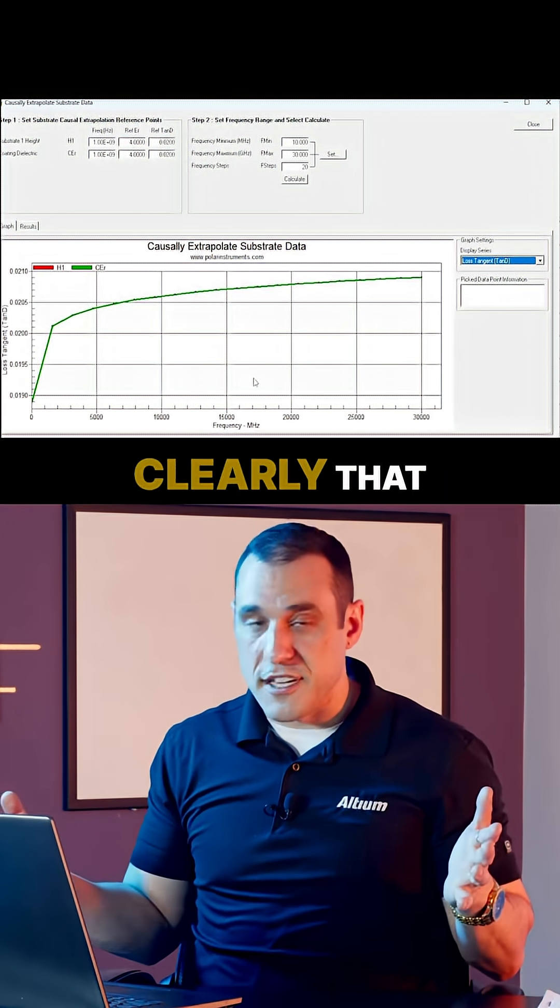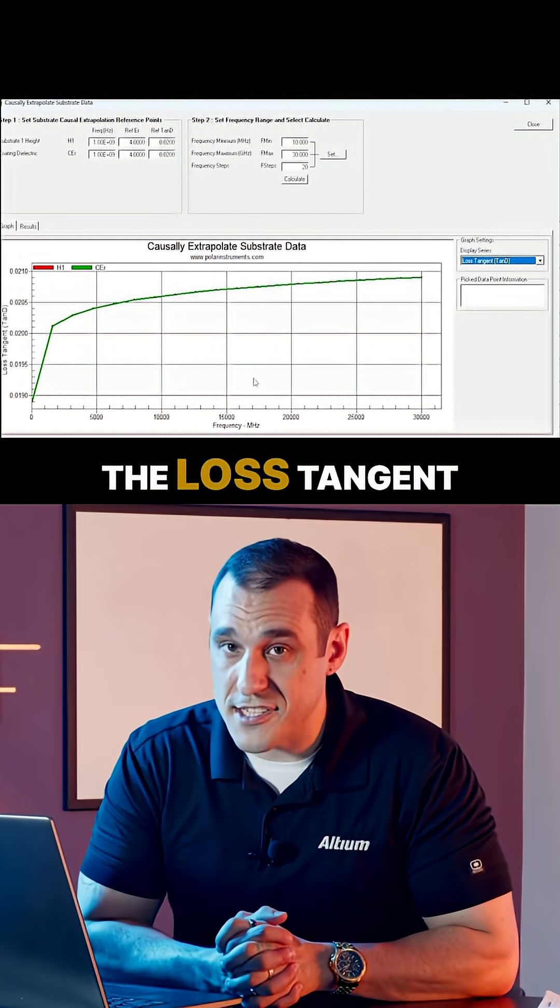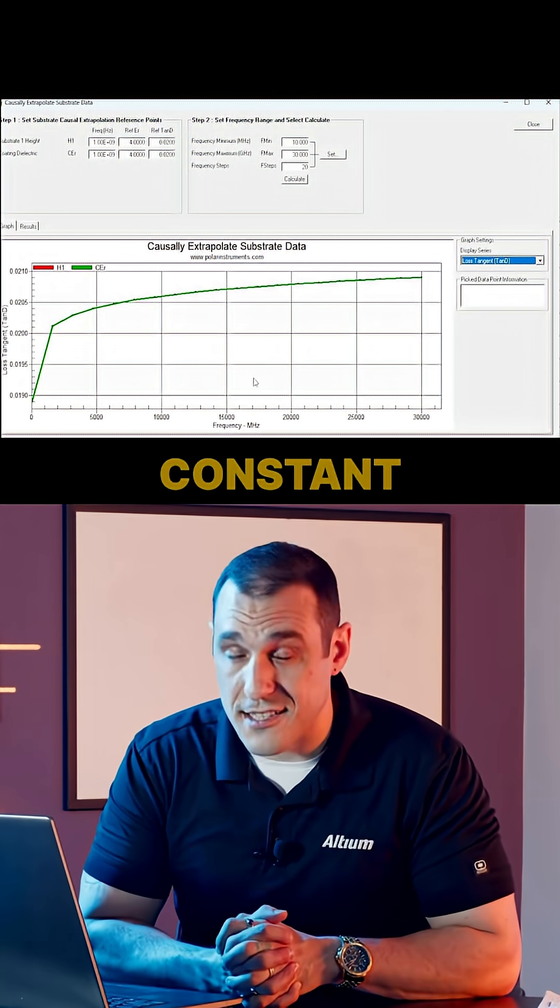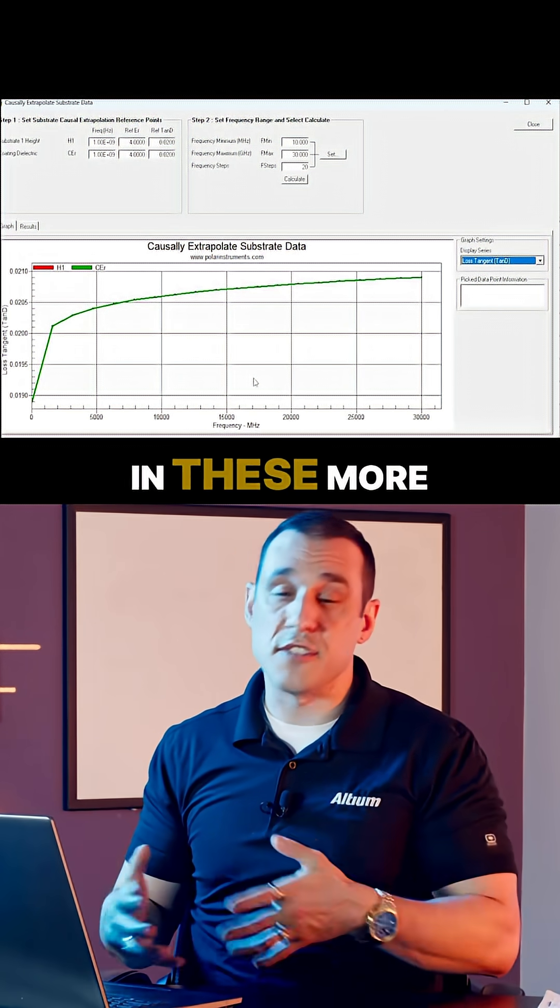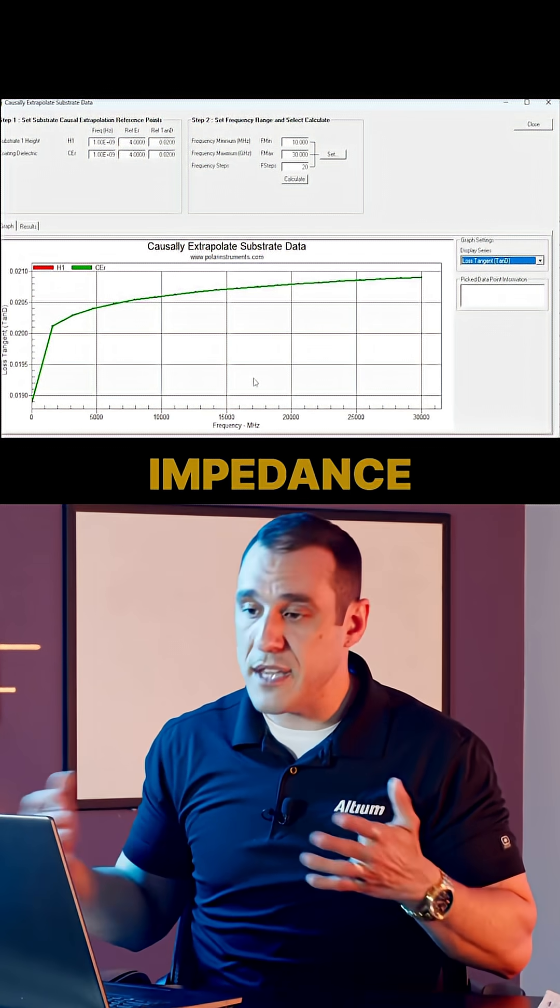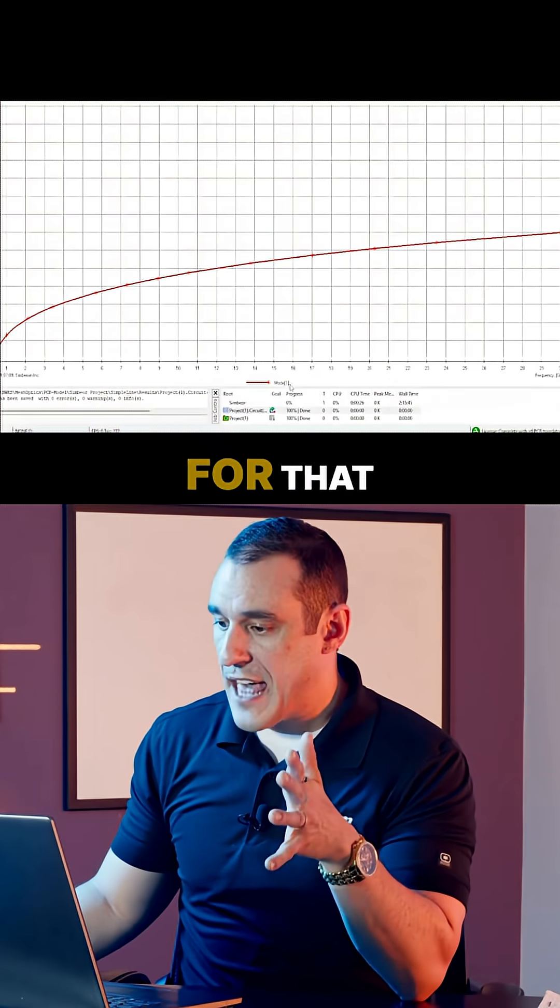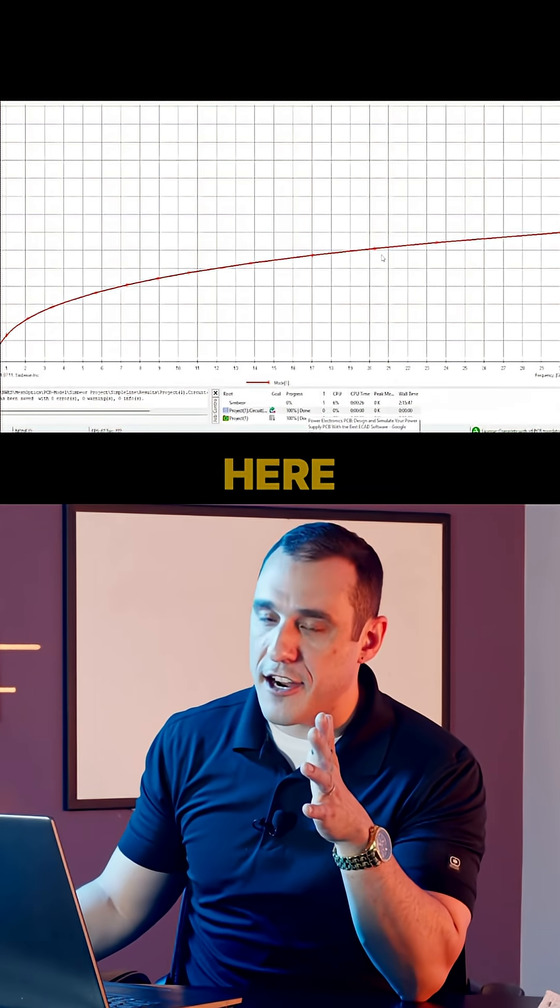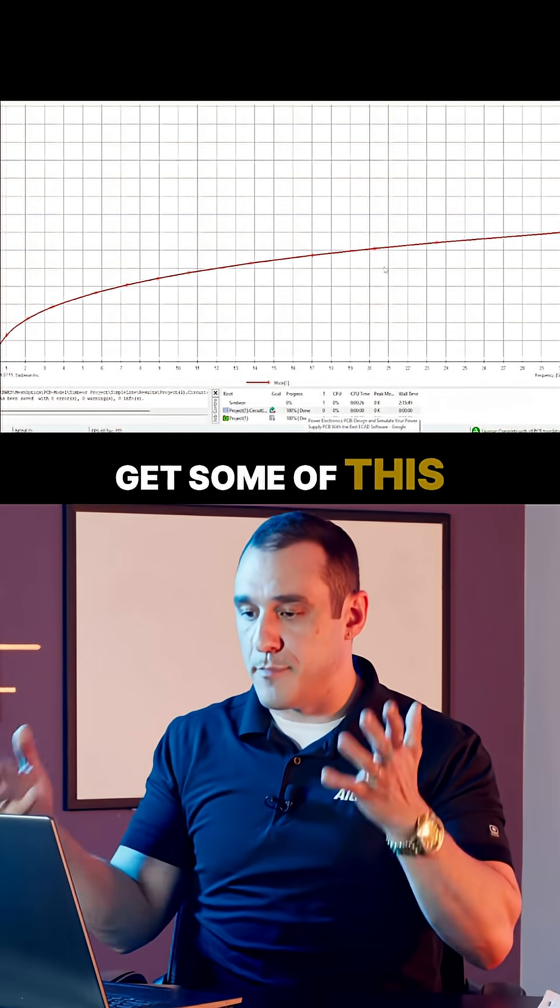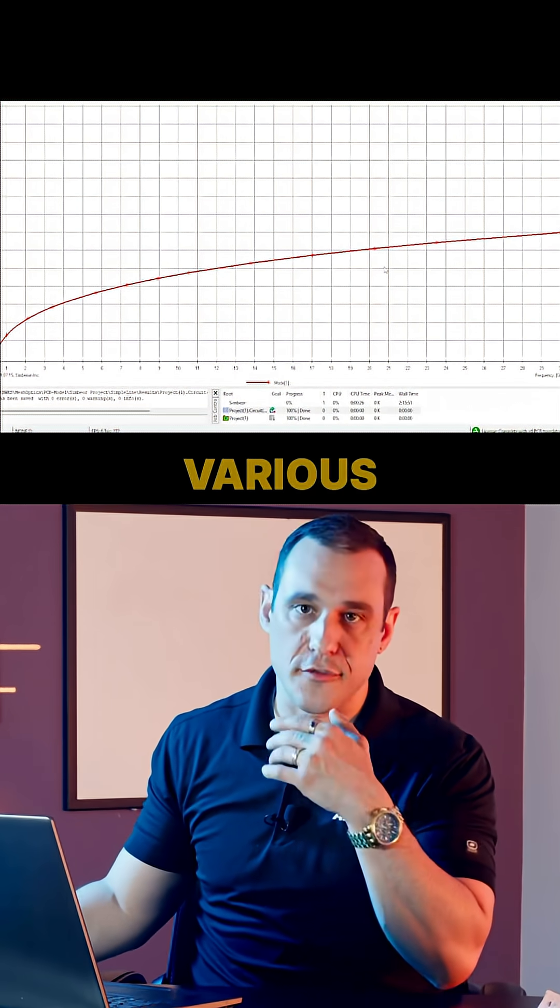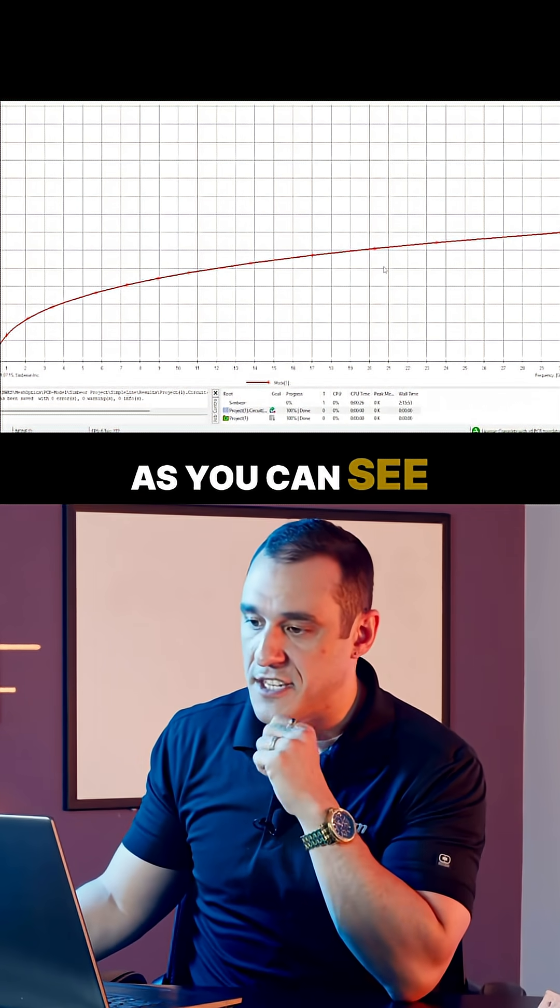You can see here very clearly that the dielectric constant and the loss tangent are actually not constant. That's what has to be accounted for in these more complex models to determine impedance. Symbiore accounts for that in this graph here, and that's why you get some of this big variation across these various frequency ranges.